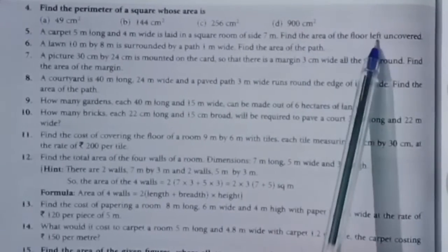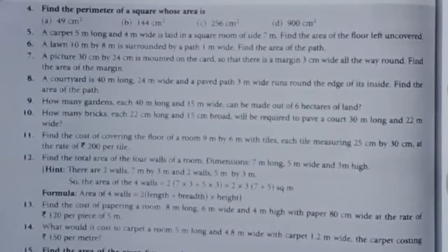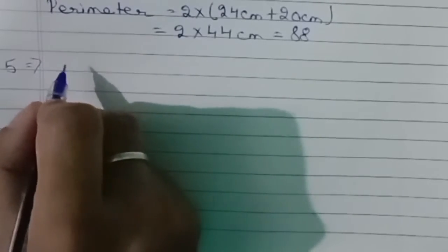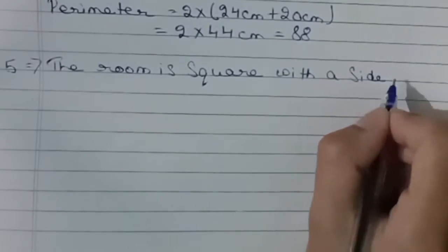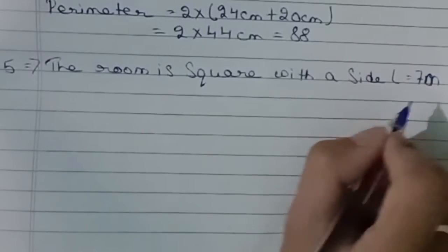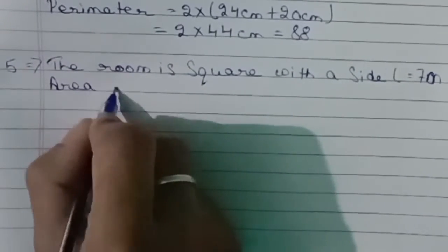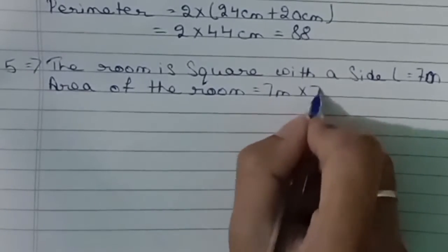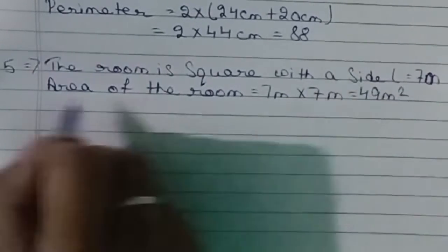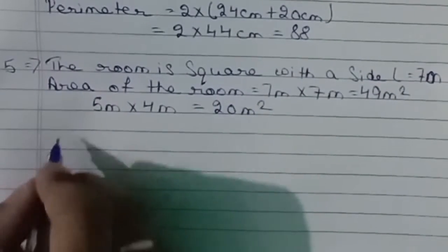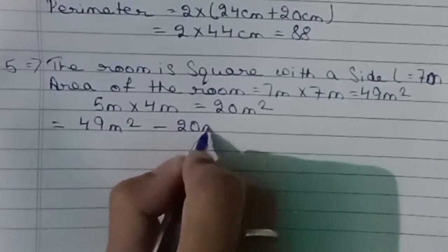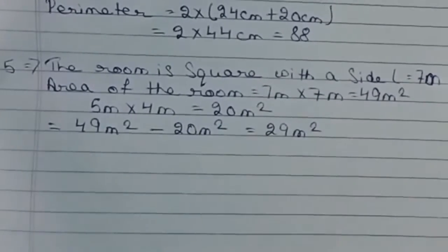Question 5. A carpet 5 mm long and 4 mm wide is laid in a square room of side 7 mm. Find the area of the floor left uncovered. Area of room = 7 × 7 = 49 mm². Area of carpet = 5 × 4 = 20 mm². Area uncovered = 49 − 20 = 29 mm².